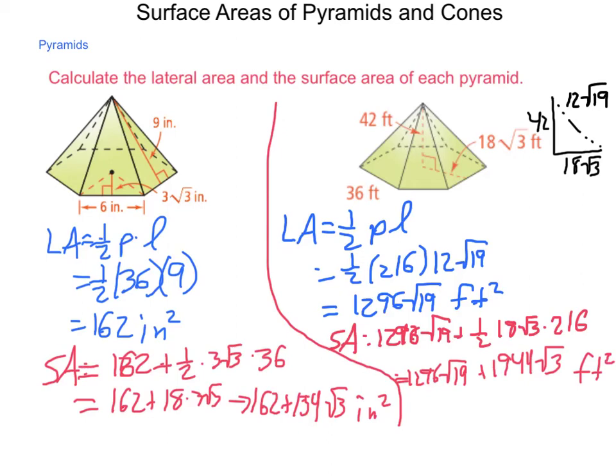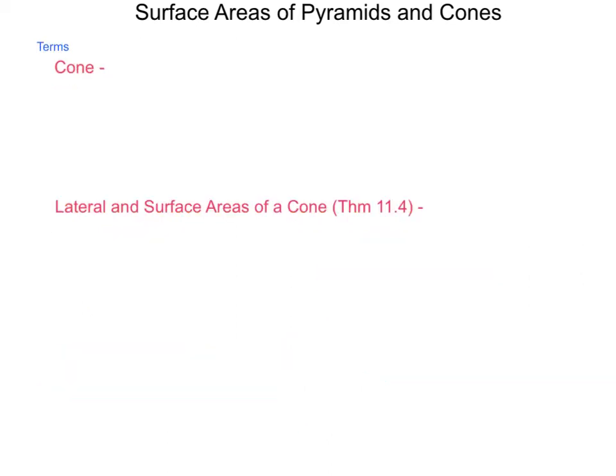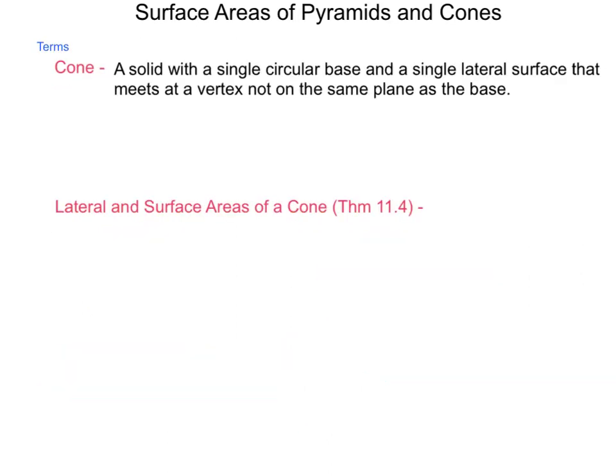But this is just looking at our pyramids. We also need to find these values for cones. So let's define. A cone, by definition, is a solid with a single circular base and a single lateral surface that meets at a vertex not on the same plane as the base. Now our altitude, vertex, and slant height parts all come into play here just as they did with our pyramids.